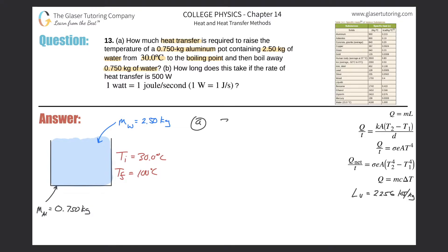The temperature has to go from 30 degrees Celsius all the way to 100 degrees Celsius — that's the boiling point of water, not aluminum. If the water inside the pot goes from 30 to 100 degrees Celsius, the aluminum pot surrounding the water is also changing in temperature. Otherwise it'd be a perfect insulator and the water wouldn't be increasing in temperature at all.